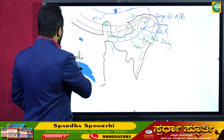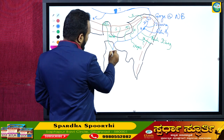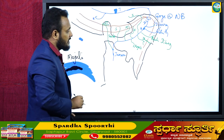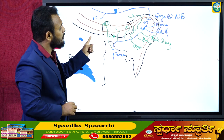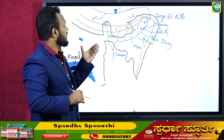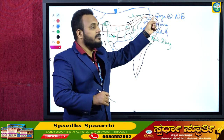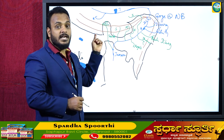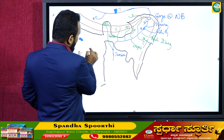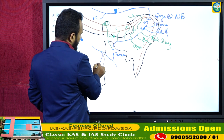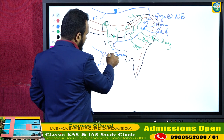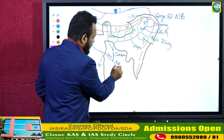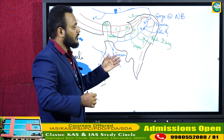Soon after Tista joins Brahmaputra, the river is called Jamuna. Brahmaputra has many synonyms: Yarlung Sangpo in Tibet, Dihang in Arunachal Pradesh, Brahmaputra in the rest of India, and Jamuna in Bangladesh. The Ganga river splits into two distributaries in Bangladesh — Hooghly and Padma. Jamuna goes and joins Padma.